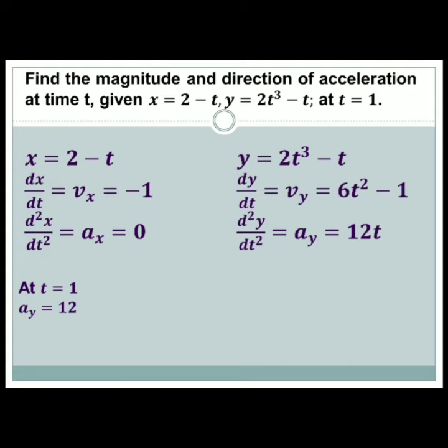For x equals 2 minus t, dx/dt equals vx equals negative 1, then d²x/dt² equals ax equals 0.